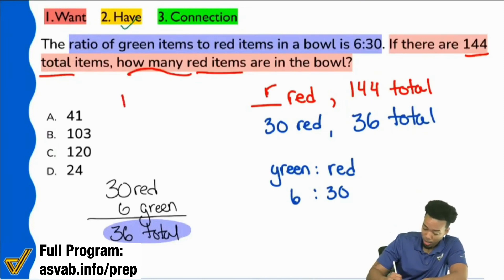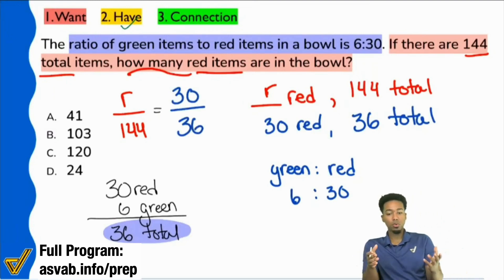I'm going to say red over 144 equals, then we have 30 over 36. So everyone, do we see how even though we took a little more time on that setup, boom, now we have made sense, at least a little more sense than before on this problem. Yes or no? Are we good on that? Perfect.